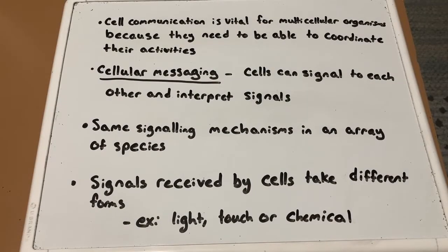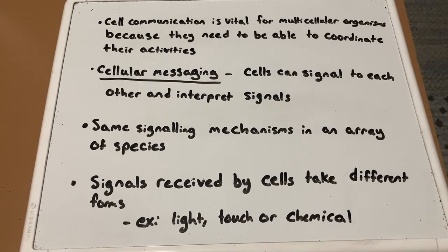Cell communication is vital for multicellular organisms. Communication is important because the organism needs to be able to coordinate their activities that allow them to not only survive, but also reproduce. We begin this lesson with cellular messaging, which occurs because cells can signal to each other and interpret signals that they receive. It has been found that the same cell signaling mechanisms have been seen in an array of species and processes through cell research.